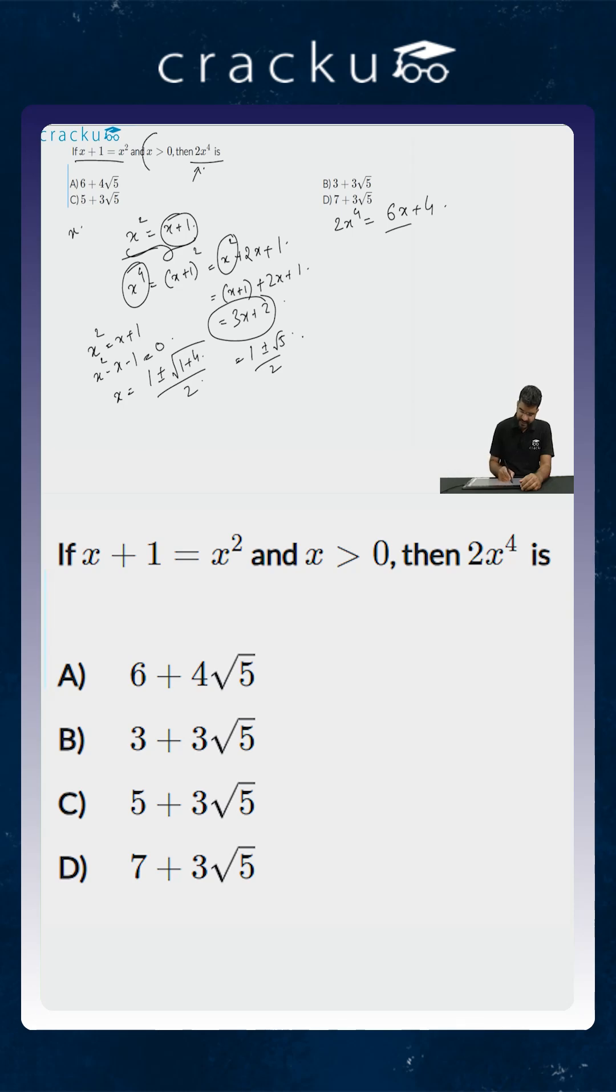But we are told that x is greater than 0. So 1 minus root 5 by 2 is not valid. So the value of x will be 1 plus root 5 by 2.